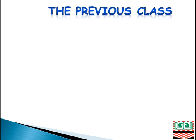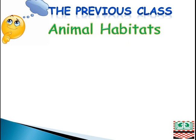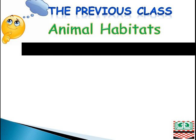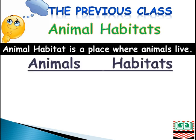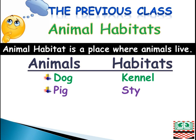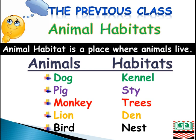Can you remember what we talked about in our previous class? Brilliant! We talked about animal habitats. Animal habitat is a place where animals live. We gave some examples: a dog's habitat is called a kennel, a pig's habitat is called a sty, a monkey's habitat is usually on the tree, a lion's habitat is called a den, and a bird's habitat is called a nest.